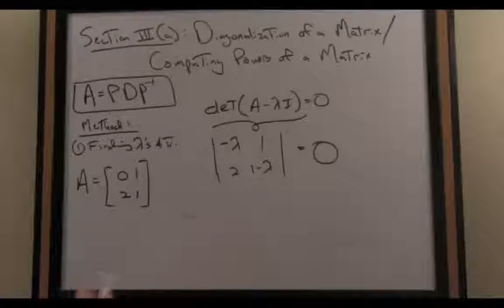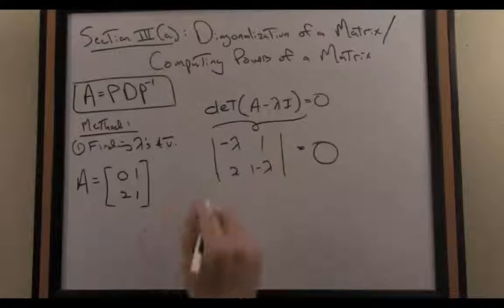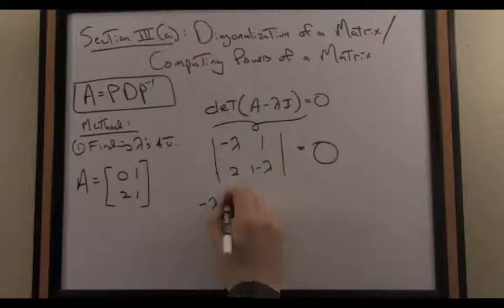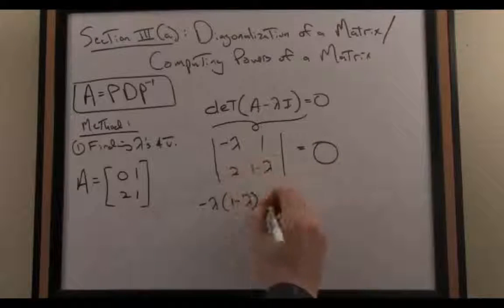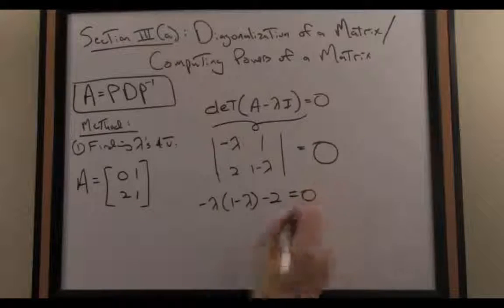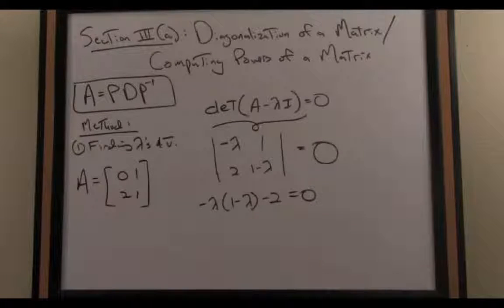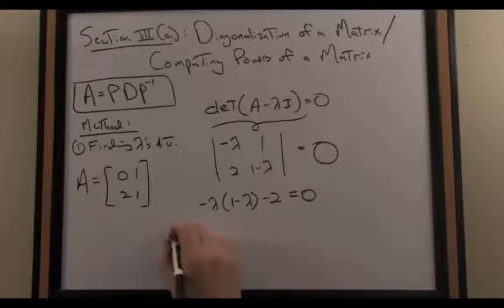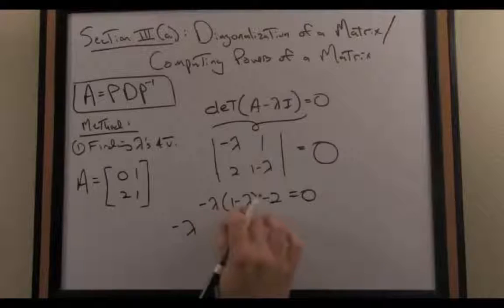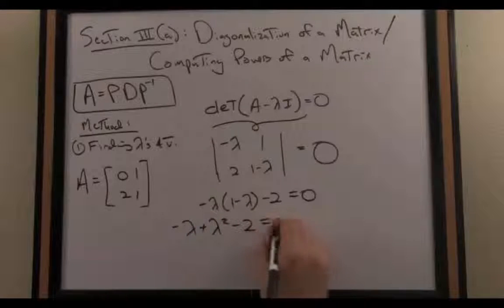We'll take the determinant and set it equal to 0. The determinant of a 2 by 2 matrix is computed AD minus BC. So the result is we have -λ times the quantity (1-λ) minus 2 equals 0. Let's solve that quadratic equation in lambda. I'll distribute the negative lambda across the binomial term. So I have -λ, -λ times -λ is positive λ² minus 2 equals 0.